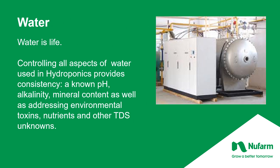Let's go to the water now. Controlling all aspects of water used in hydroponics provides consistency — you have a known pH, you know what your alkalinity is, you'll know what the mineral content is, as well as addressing any environmental toxins, nutrients, and other total dissolved solids in that water source. If you're using well water, you have issues with mineral content. If you're using city water, you have issues with pH levels. And if you're using surface water, like ponds or rivers, you can have weeds, seeds, pest insects, and diseases. To start with a good water system, you need to begin with a reverse osmosis treatment, which removes all impurities, organic as well as inorganic, and provides you with a base water system that you can now manipulate.